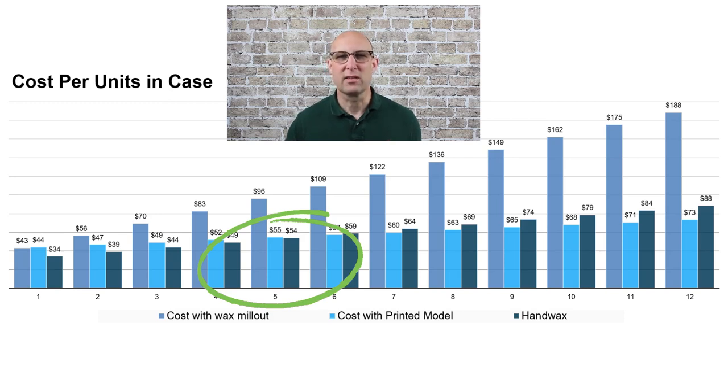At the five unit mark, the unit cost for hand waxing and printing a model is nearly the same. With any higher unit count than five, printing a model makes more financial sense, because only 11% of the labor items affect each additional unit. Below five units, the costs your milling center charges for a printed model actually outweigh the labor cost savings. Printing a diagnostic wax up has advantages and disadvantages — one advantage is it's really cost efficient and highly scalable since you can produce several at the same time. A disadvantage is that clients may lose the perceived value of the cases.